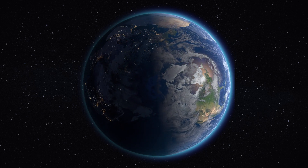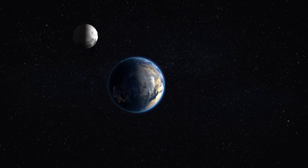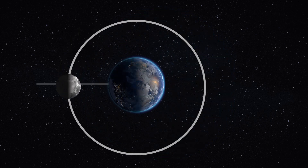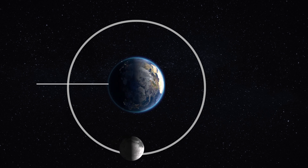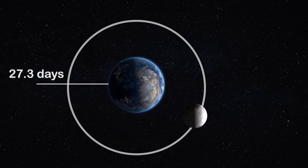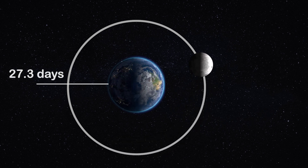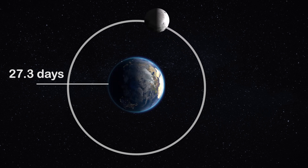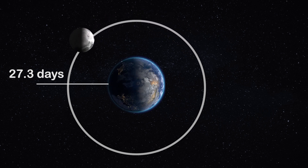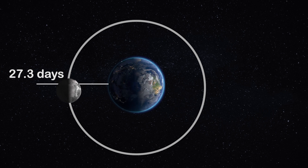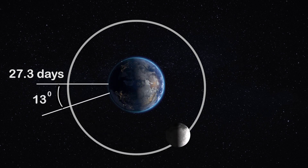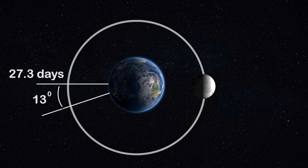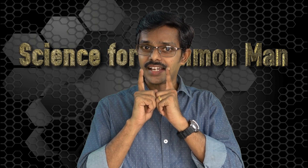At the same time, the Moon is revolving around the Earth and it takes 27.3 days to complete one revolution. In another way, when Earth completes one rotation — during one day — the position of the Moon will change only by around 13 degrees.